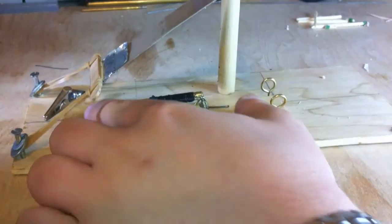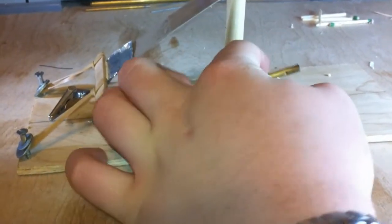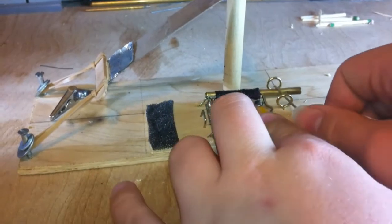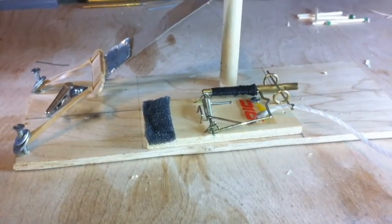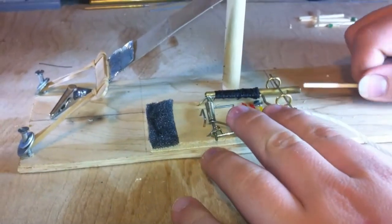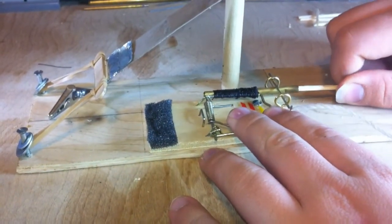To use the remote ignition system, you pull back on the mousetrap's lever. While holding the lever down, you stick the trigger pin through an eye screw over the lever and through the other eye screw. When you're ready to use the ignition system, you'll pull this pin out real fast.